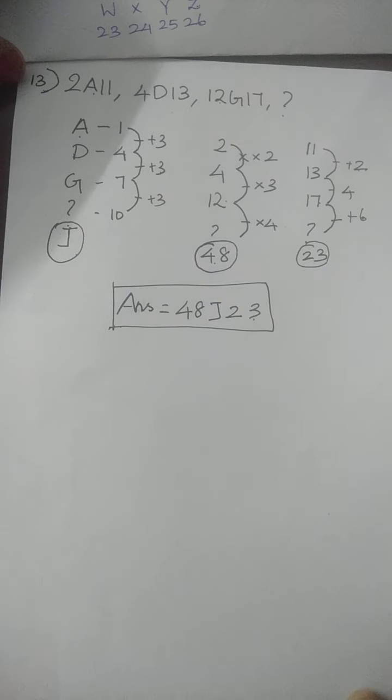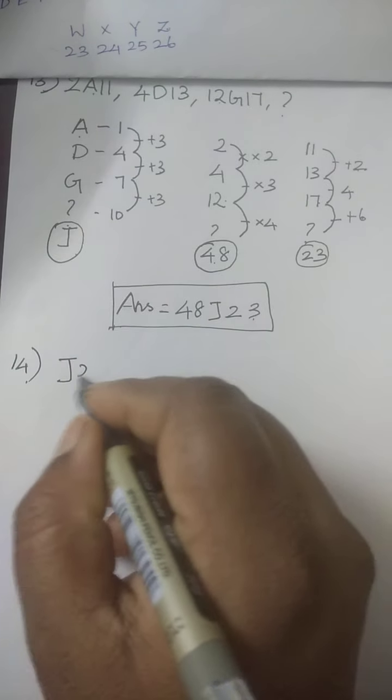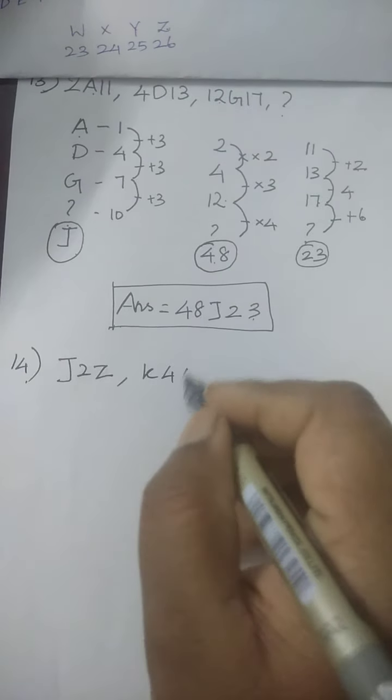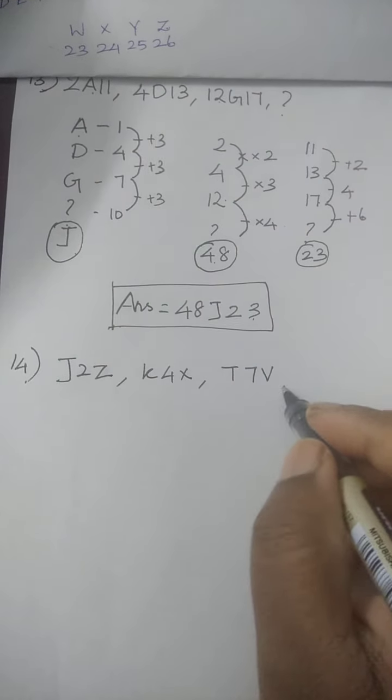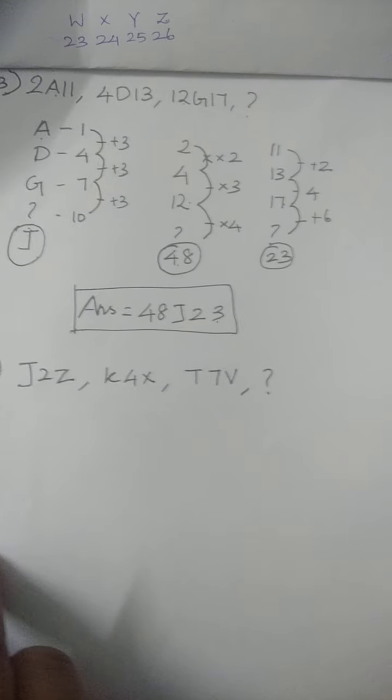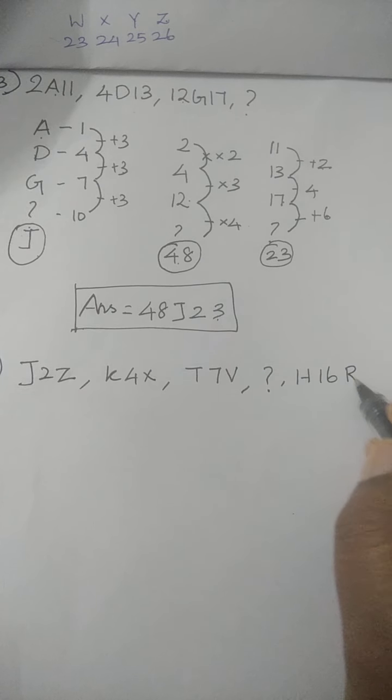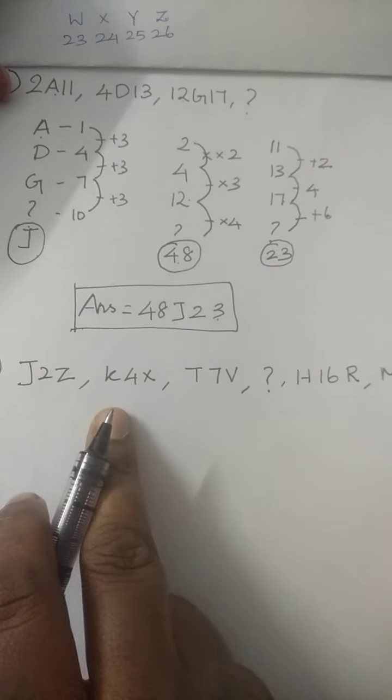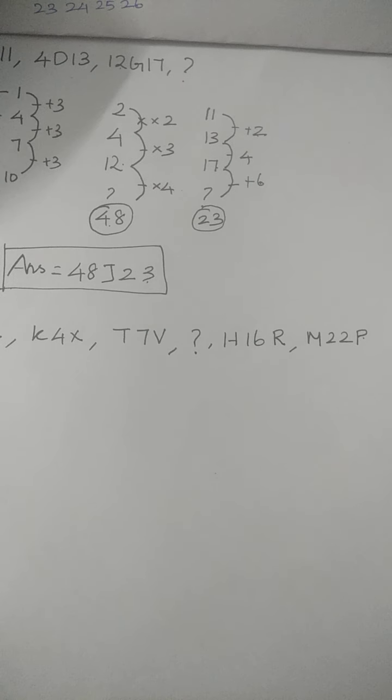Then we are moving to 14th sum. And the question is: J2Z, K4X, I7V, H16R, M22P. J2Z, K4X, I7V, H16R, then M22P.